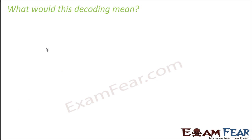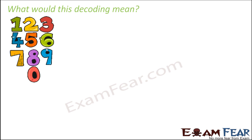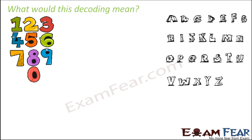To better understand what we mean by establishing a relationship between bases and amino acids, let us consider an example. Suppose on one hand you have the digits — just zero to nine, so 10 digits. On the other hand, you have alphabets — 26 alphabets. Now, suppose somebody's name is John. If I ask you to write this name in terms of numbers, using digits rather than alphabets, will you be able to do it?